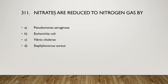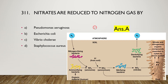The next question: nitrates are reduced to nitrogen gas by Pseudomonas aeruginosa, Escherichia coli, Vibrio cholerae, or Staphylococcus aureus. The right answer is option A — Pseudomonas aeruginosa. This nitrite can be converted to atmospheric nitrogen by denitrifying bacteria.